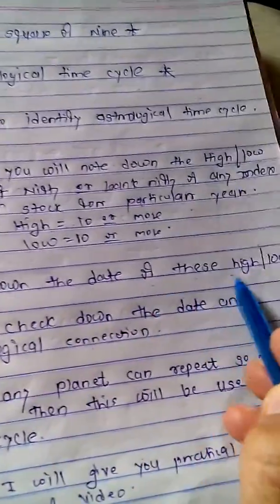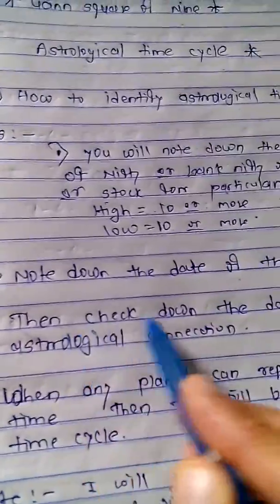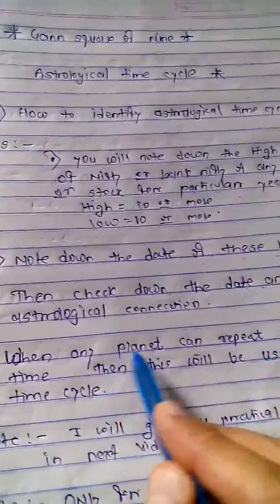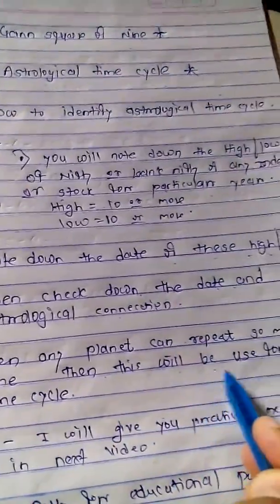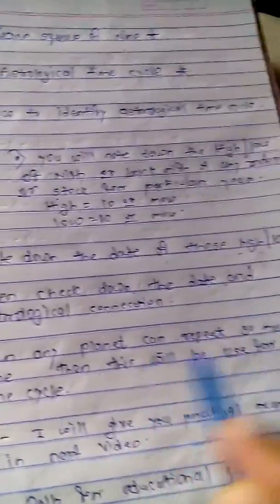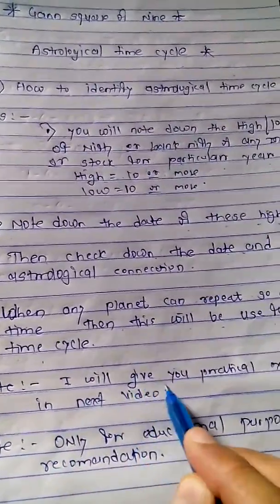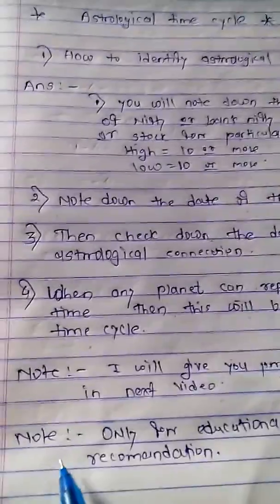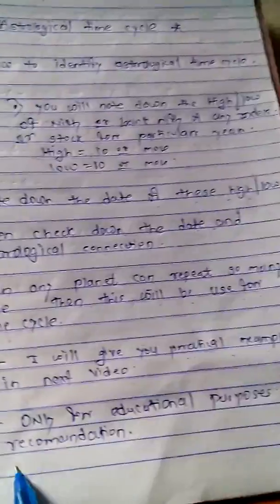Next, note down the dates of these highs and lows, then check the dates for astrological connections — when any planet repeats a position multiple times, that can be used for the time cycle. I will give you a practical example in the next video. Note: this is only for educational purposes, not a recommendation.